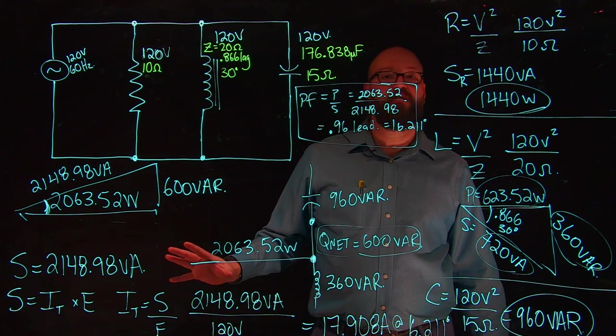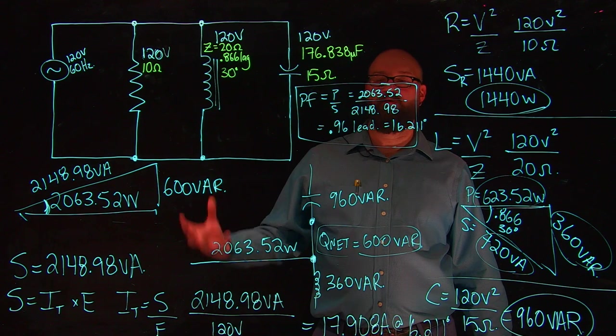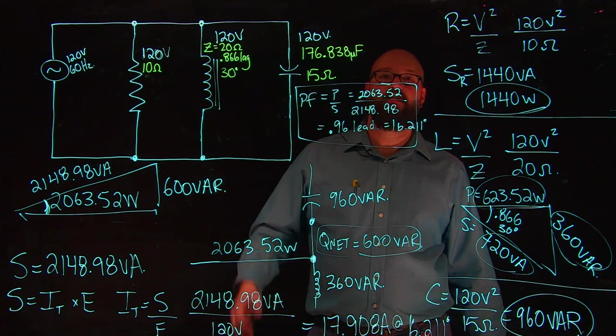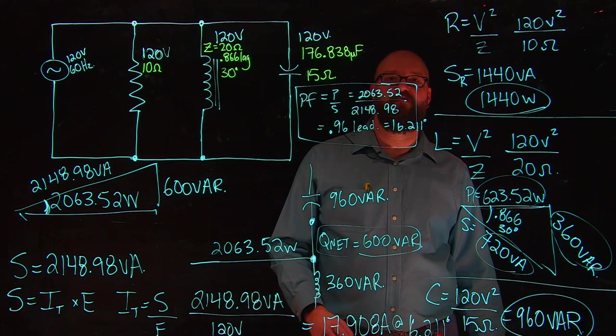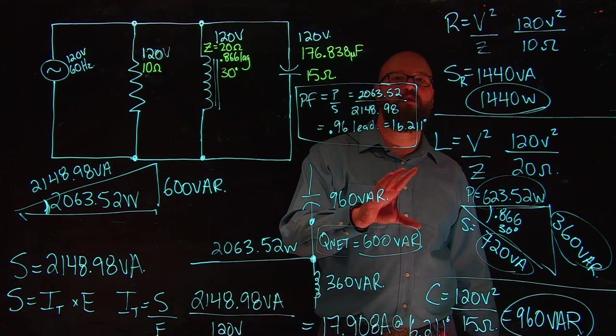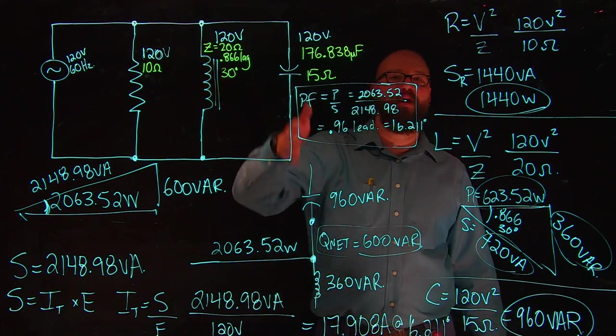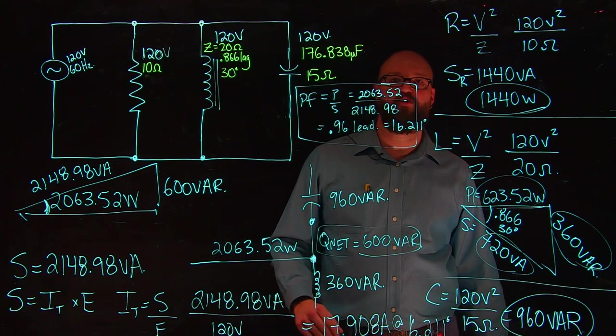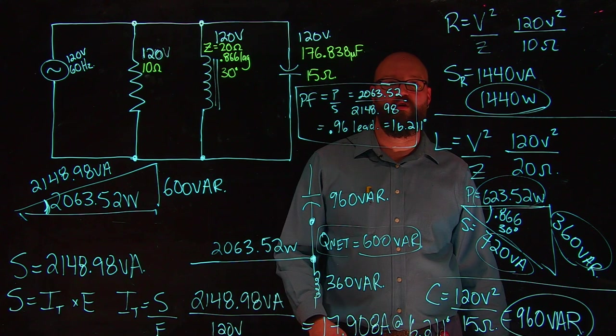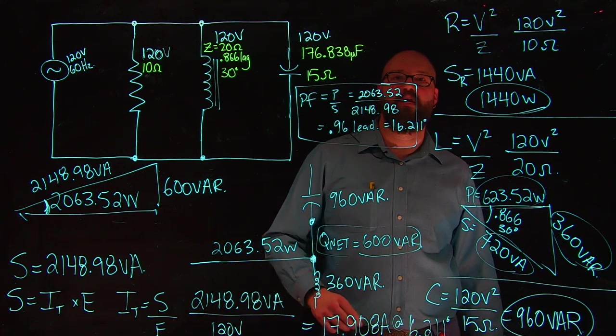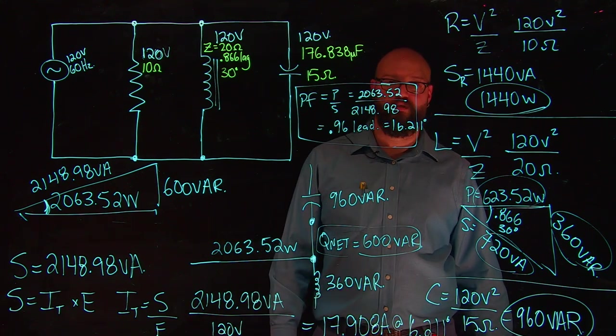So hopefully this has helped you in your steps towards solving a parallel RLC. As I mentioned before, if you prefer the current method, the video that I've done previously is the exact same circuit using individual branch currents, a horizontal vertical chart, as well as looking at the Cartesian plane to solve for that total current in the end. But they do work out to the same answer. Thank you for watching. We'll see you next time.